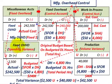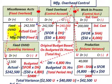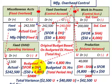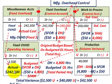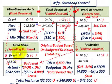For the fixed overhead spending variance, we take actual fixed cost for the period ($242,500) and subtract the budgeted amount — the standard fixed overhead rate of $50 per hour times the denominator hours of 4,800, which equals $240,000. The actual amount of $242,500 is greater than the budgeted $240,000, giving us an unfavorable spending variance of $2,500.